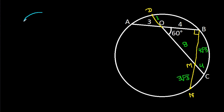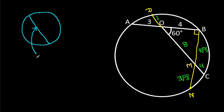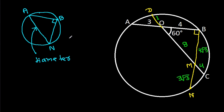Now, in any circle, a diameter makes an angle of 90 degrees on the circle. Here, AN is making an angle of 90 degrees at B, which means AN will be the diameter.